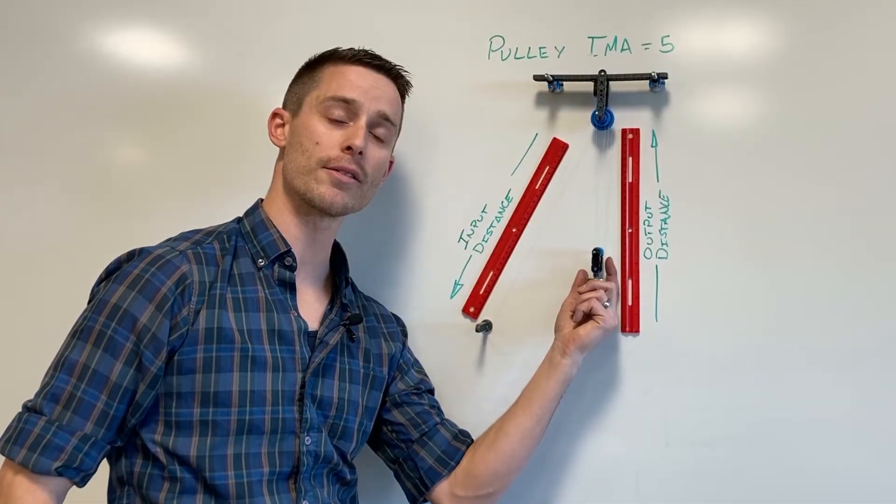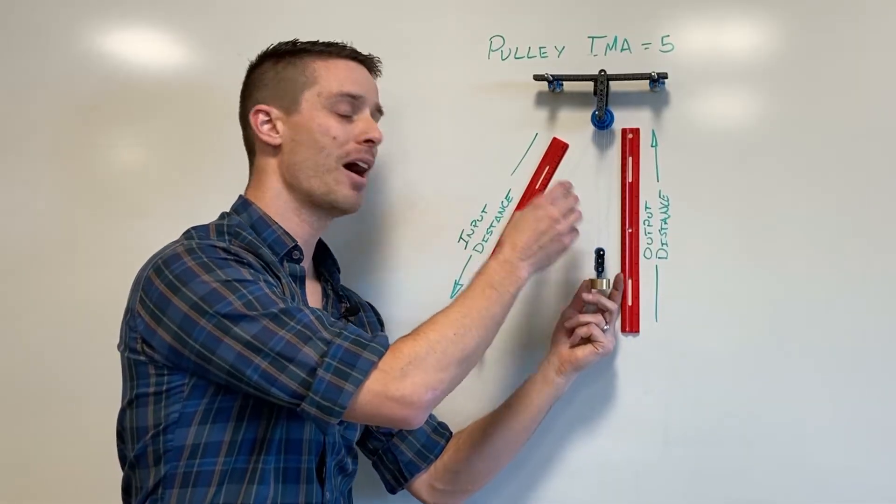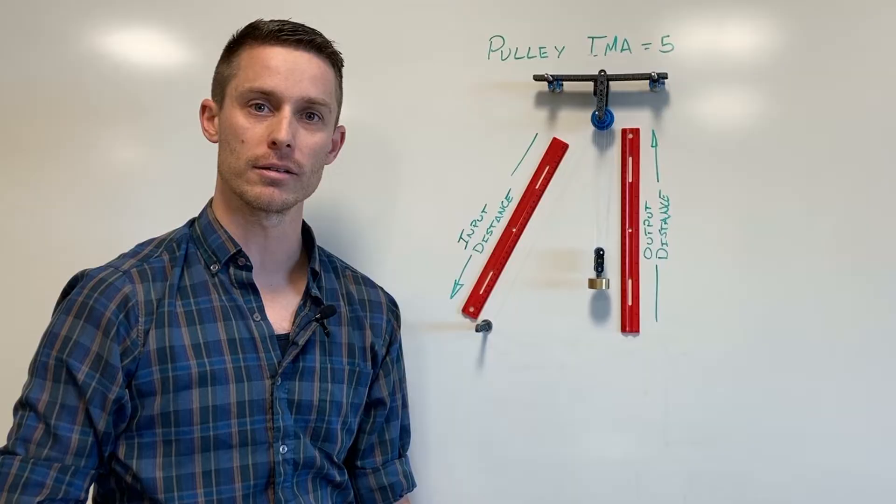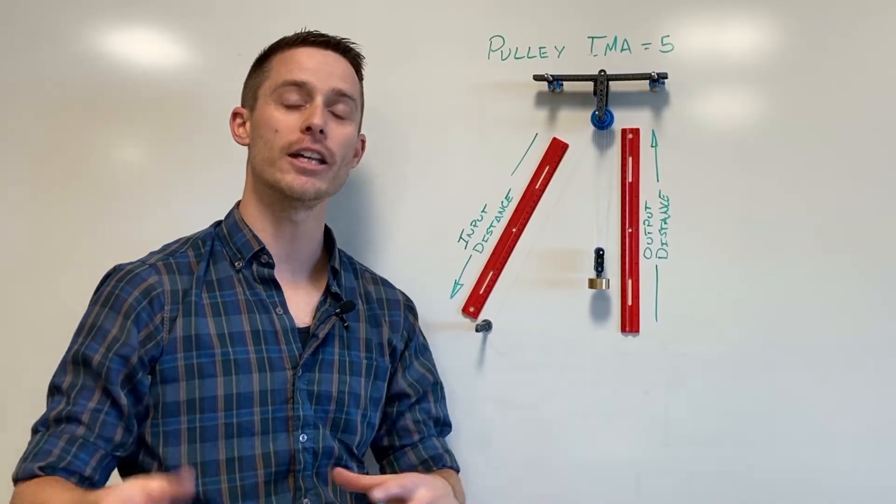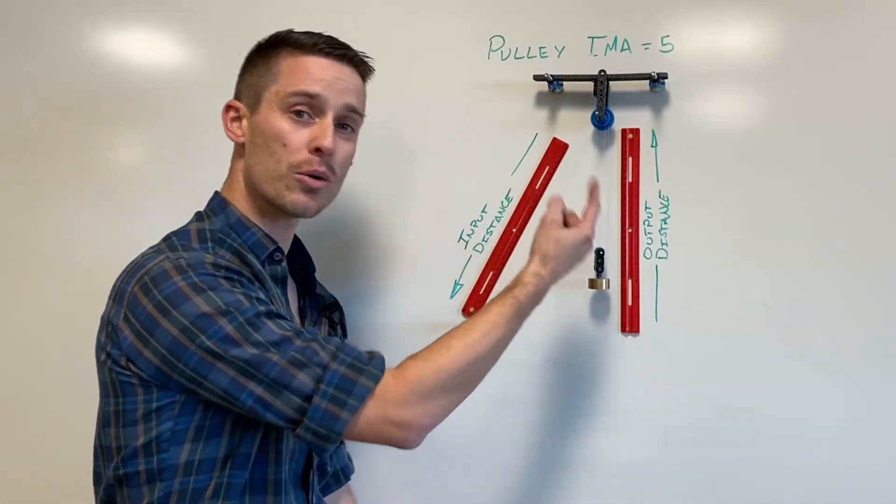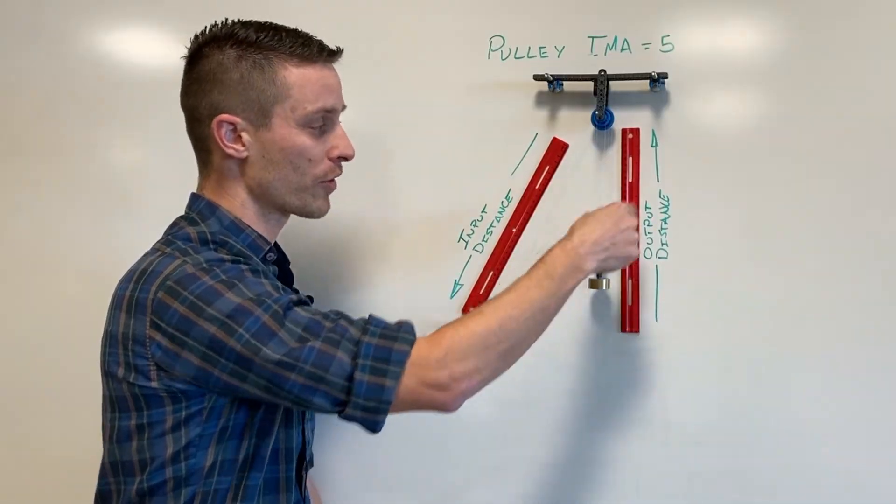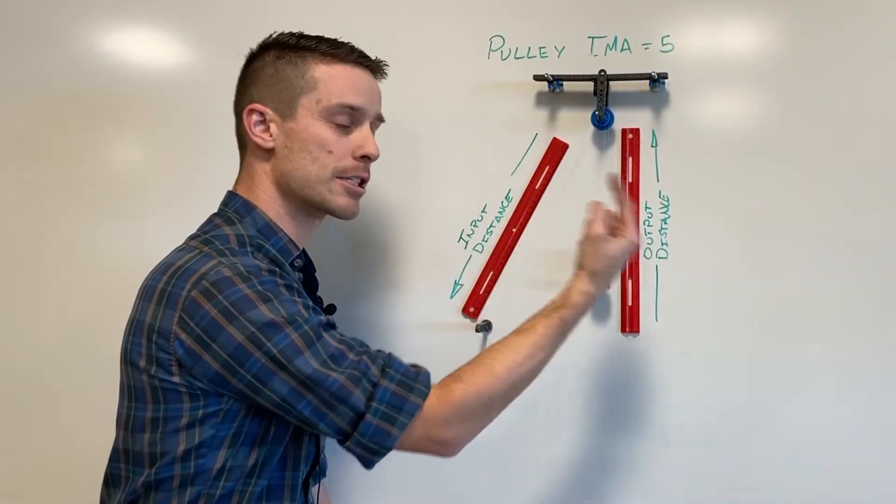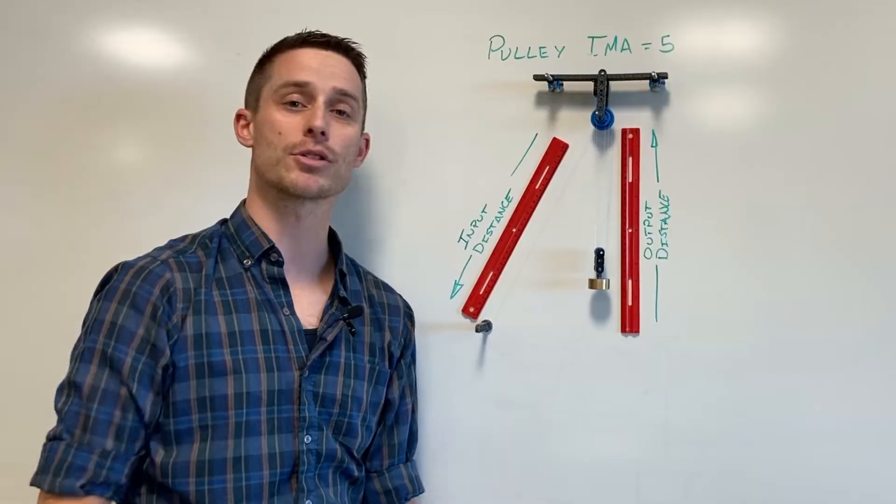And so in total these five strands needed to give up 30 centimeters worth of string or they had to get 30 centimeters shorter in total but that total change in length of string over here on this end of the pulley is split in this case between five strands of string.